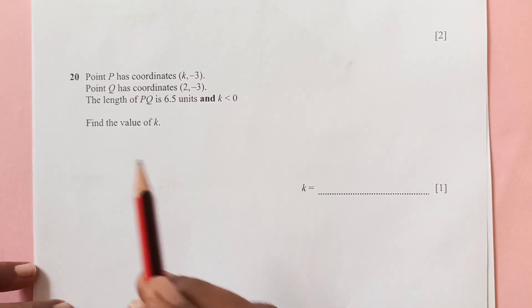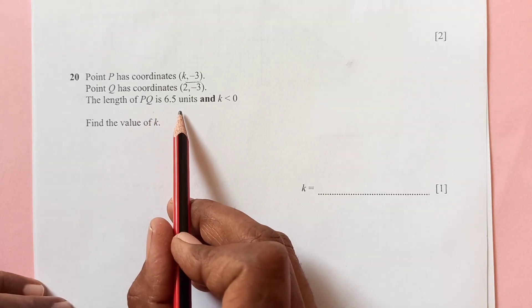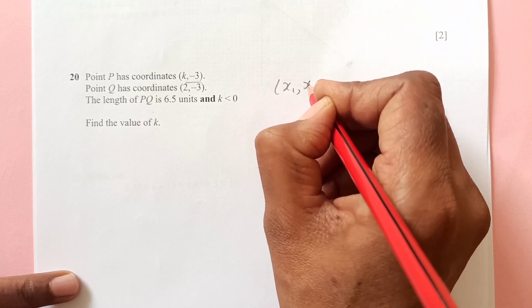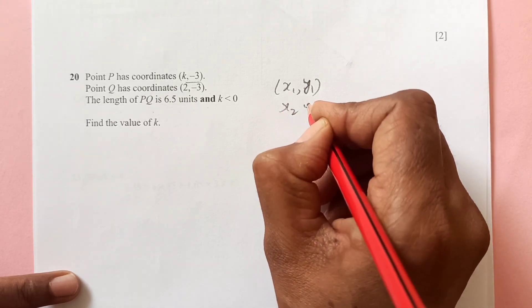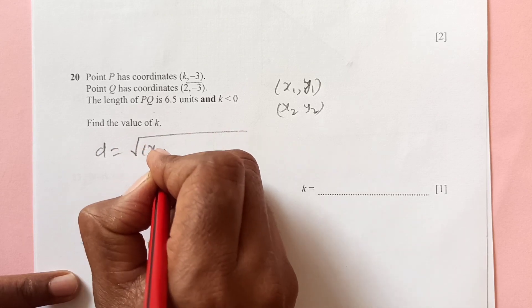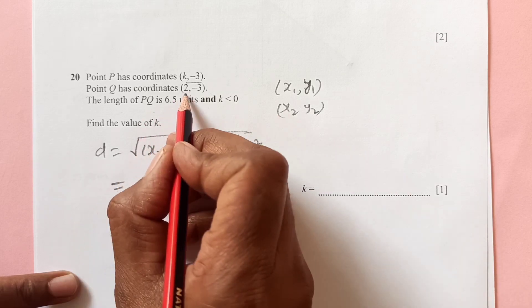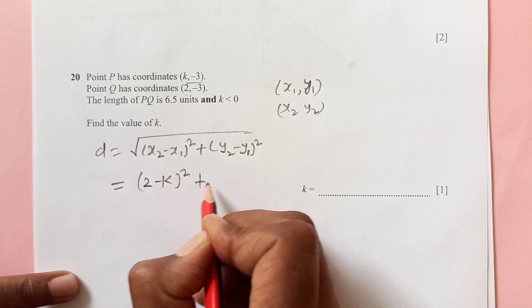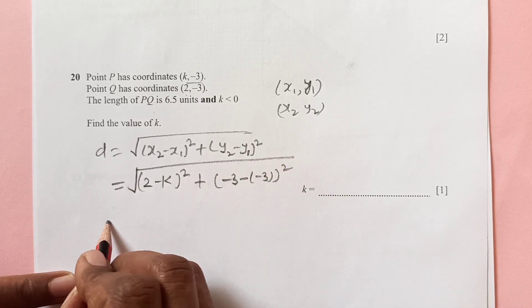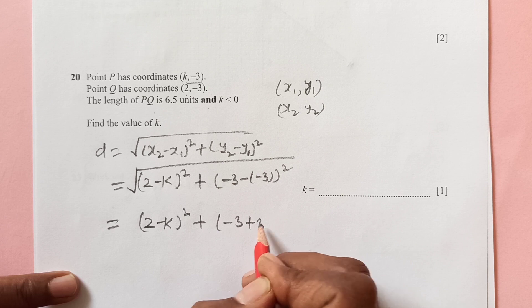Now number 20. The point P has coordinates (k, 3), Q has (2, -3). The length of PQ is 6.5 and k is less than 0. So now we have the formula if we have the points x1, y1 and the other point x2, y2. So by distance formula, we can find out the distance, which is square root of (x2 minus x1) squared plus (y2 minus y1) squared. x2 is 2 minus k squared plus y2 is negative 3 minus negative 3 squared.